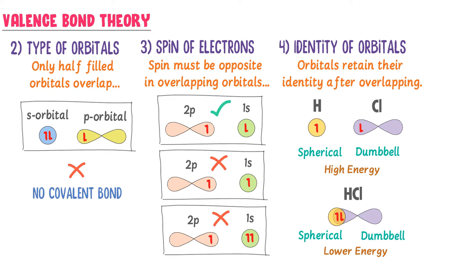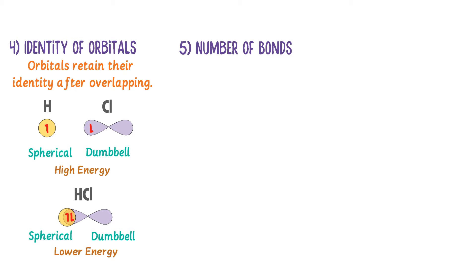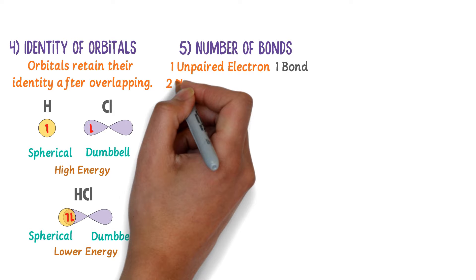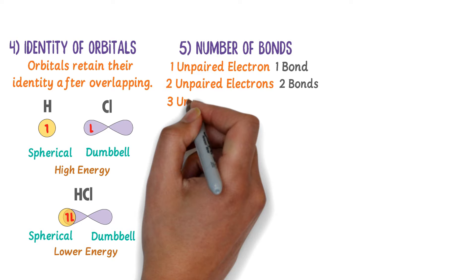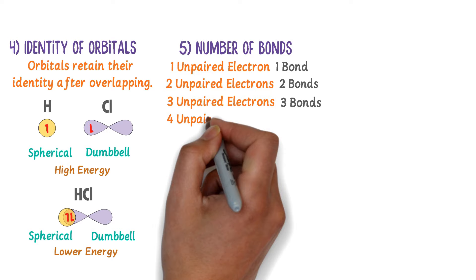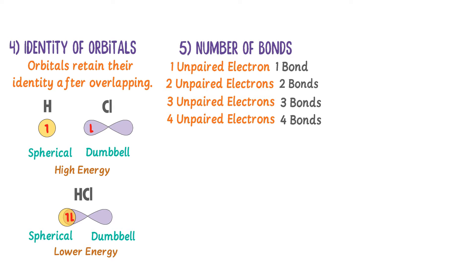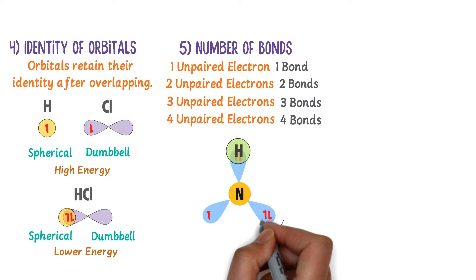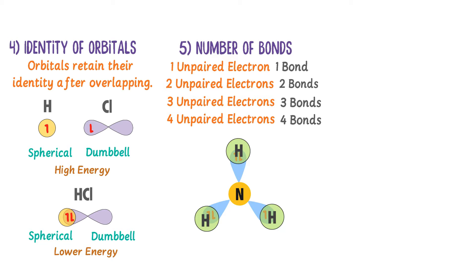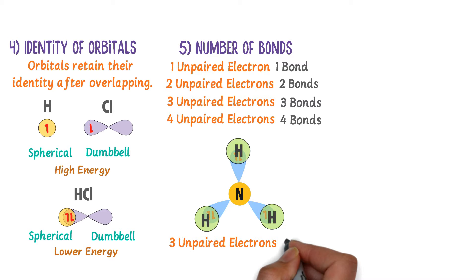The fifth point of VBT is the number of bonds. It teaches us that if there is one unpaired electron, it forms one covalent bond; two unpaired electrons form two covalent bonds; three unpaired electrons form three covalent bonds; and four unpaired electrons form four covalent bonds. For example, nitrogen has three unpaired electrons, so it shares these with one electron each from three hydrogen atoms to form NH₃ (ammonia). Due to three unpaired electrons, nitrogen forms three covalent bonds. Thus, VBT teaches us the number of bonds an atom can form.